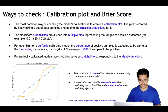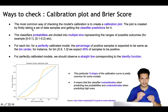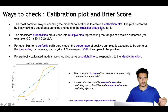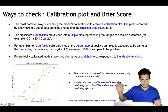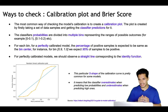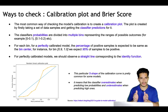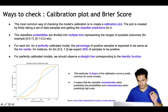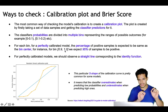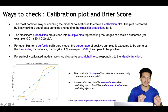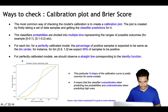The most common way of checking a model's calibration is through the calibration plot. It's created by taking data samples, getting the predicted probabilities for each data point, and then dividing the range of probabilities into multiple bins — for example, 0 to 0.1, 0.1 to 0.2, and so on. For a perfectly calibrated model, the percentage of positive samples in each bin is expected to equal the bin center — for instance, in the bin 0.9 to 1 we expect 95% of samples to be positive.